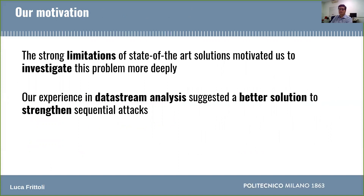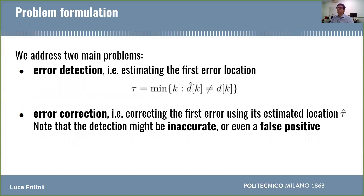The motivation for our work is this limitation of the state of the art regarding sequential attacks. We believe that our experience in signal and data stream analysis can help us find more suitable instruments to strengthen sequential attacks by better error detection. The first problem we address is error detection, which means to estimate the location of the first error, which we indicate by tau, formally defined as the first index of the attack in which the reconstructed key value is different from the true one. The second problem is error correction, which means to correct the first error using its estimated location, hat tau. This problem is not trivial: error detection might be inaccurate, meaning that hat tau might be slightly different from tau, or it might even be a false positive.